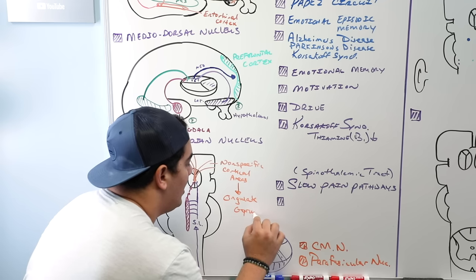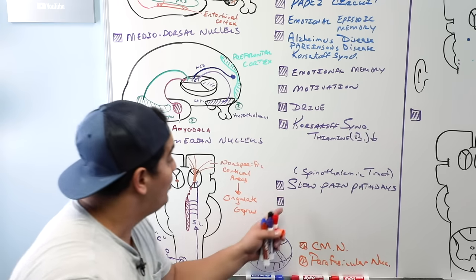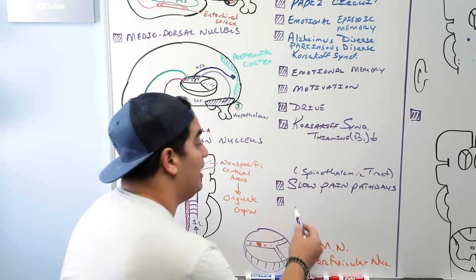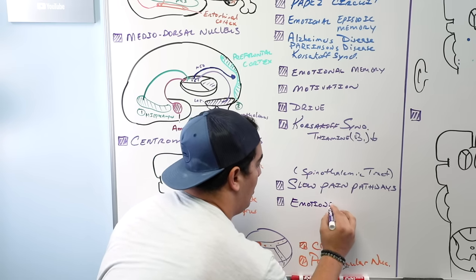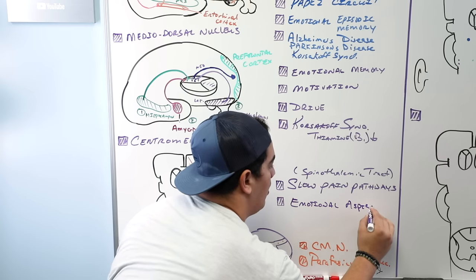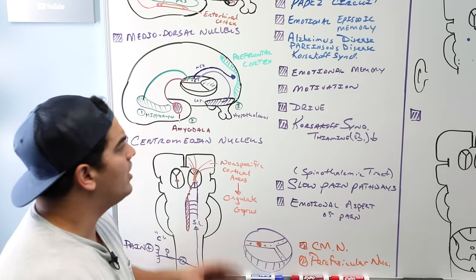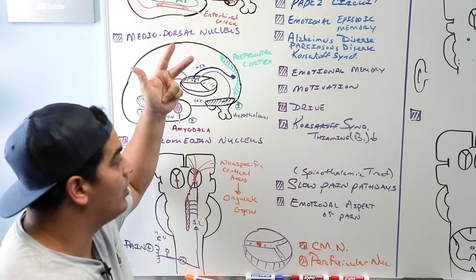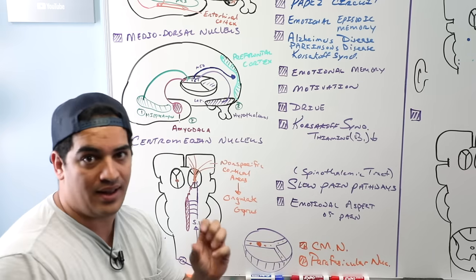So we've covered the main limbic thalamic nuclei: the anterior thalamic nucleus, the medial dorsal, and the centromedian nucleus. Now let's move on to the sensory thalamic nuclei.